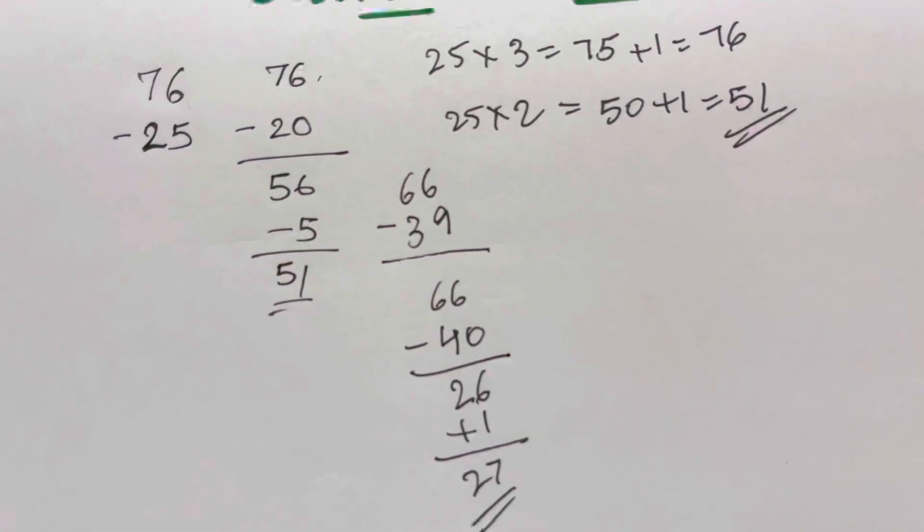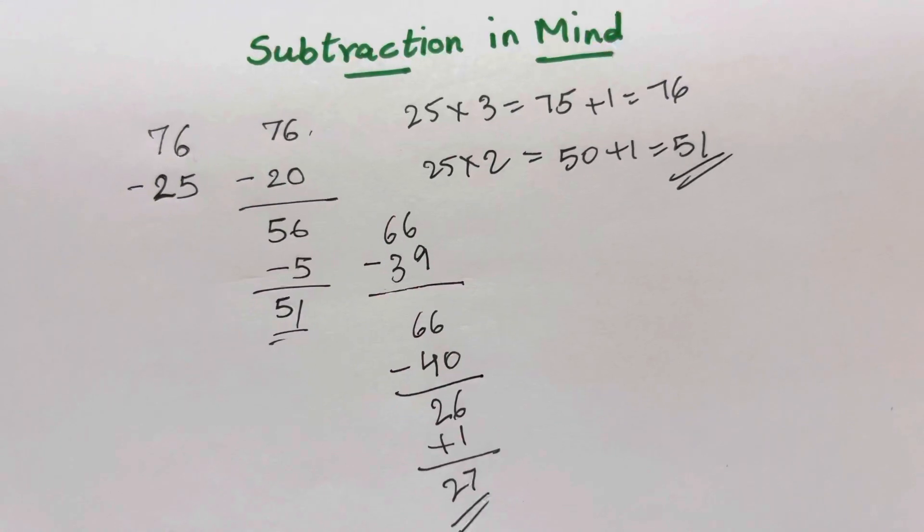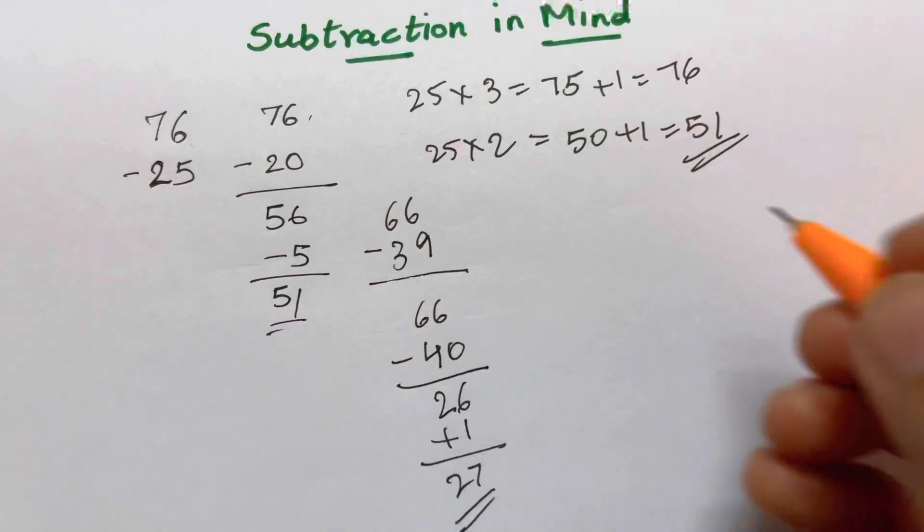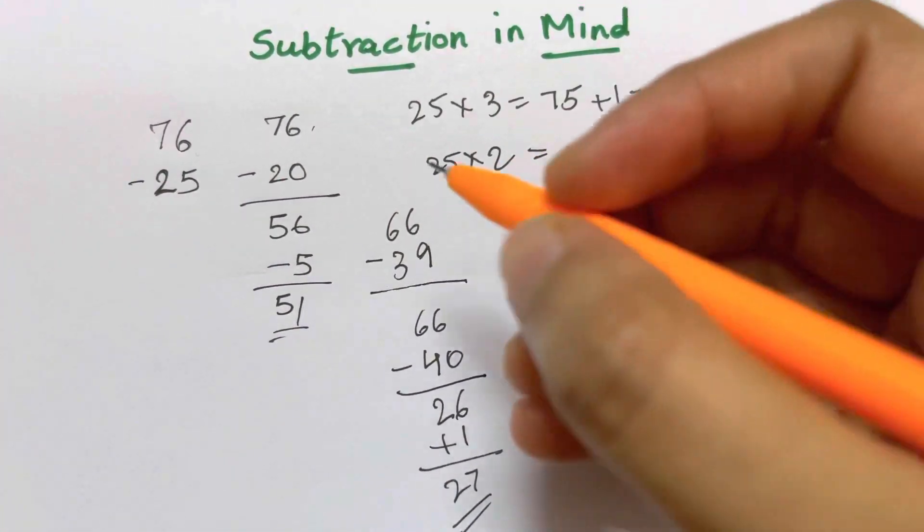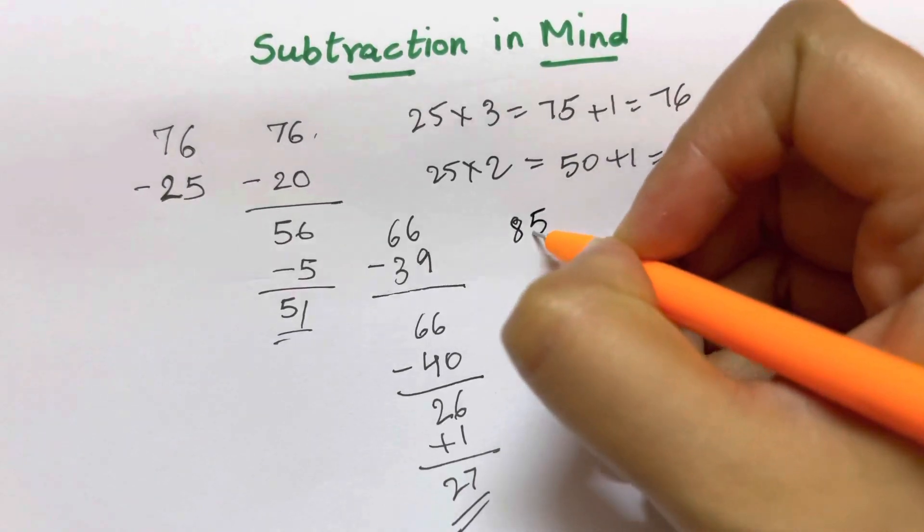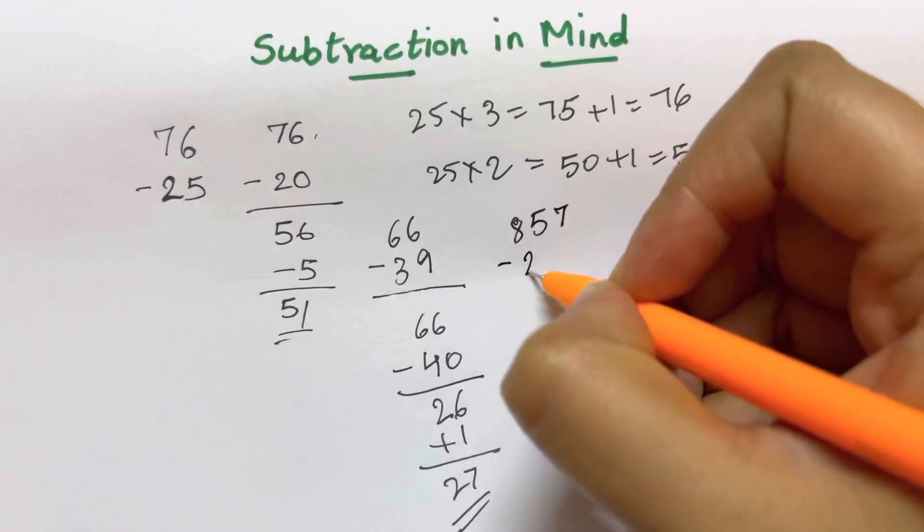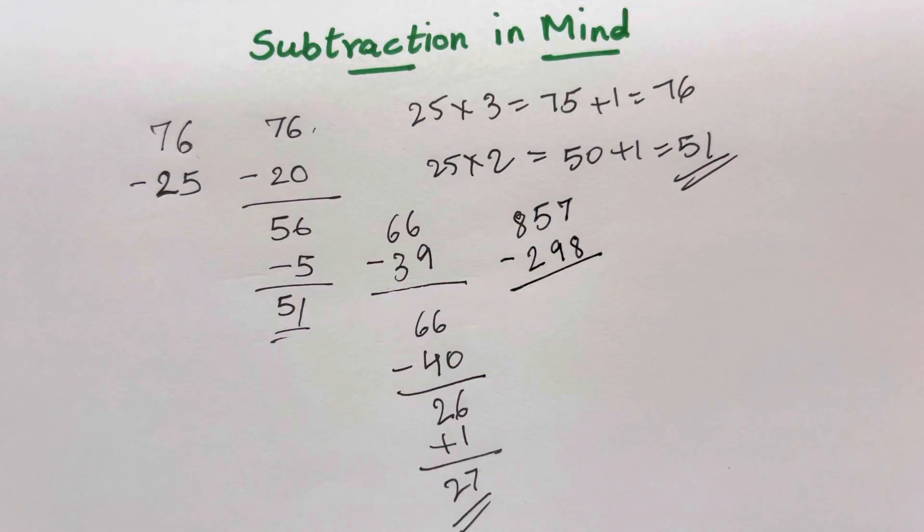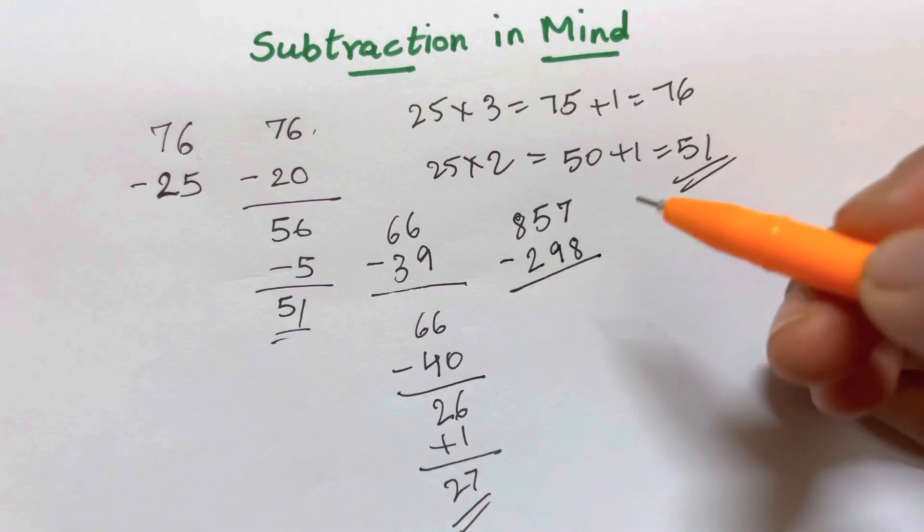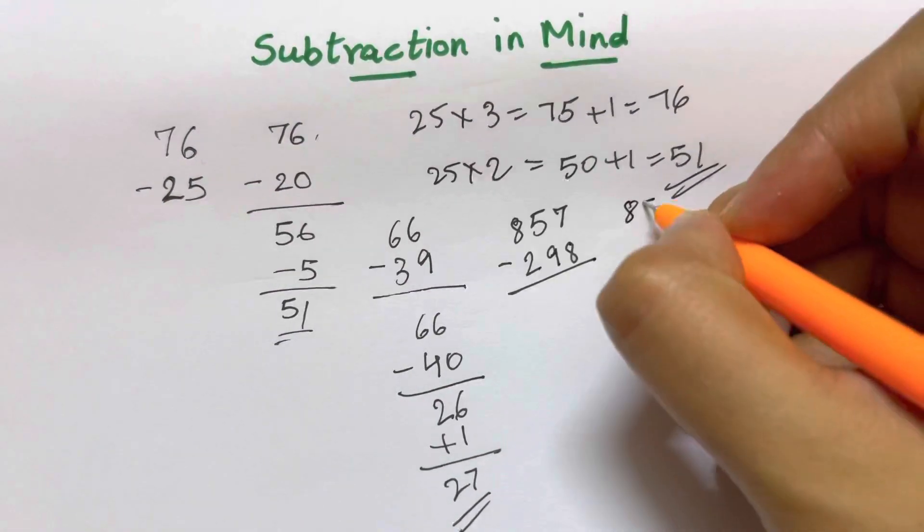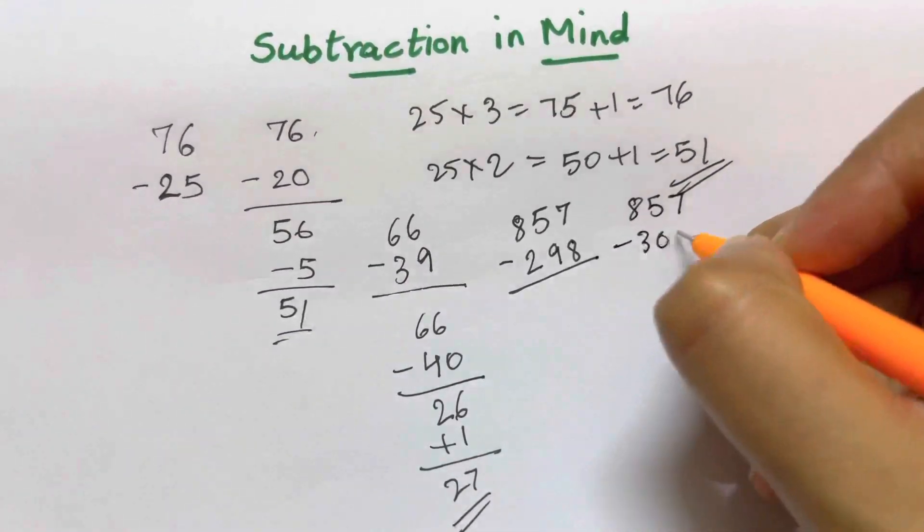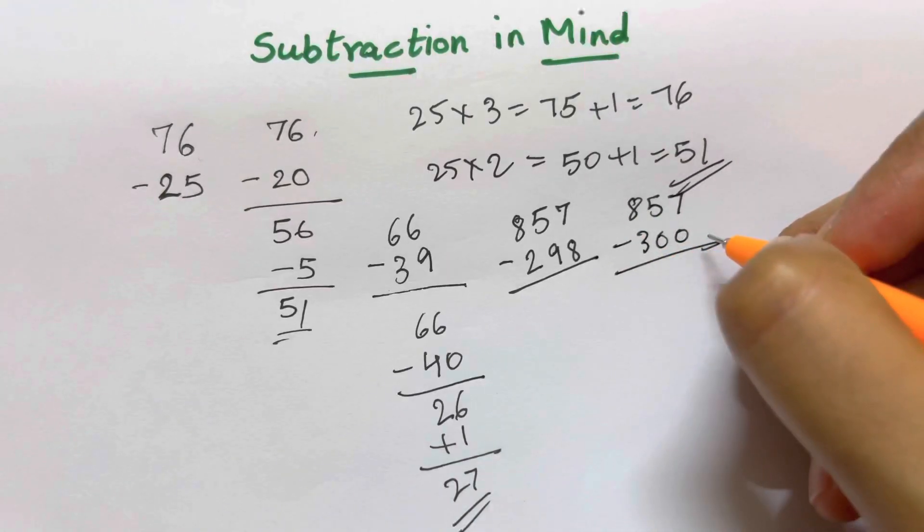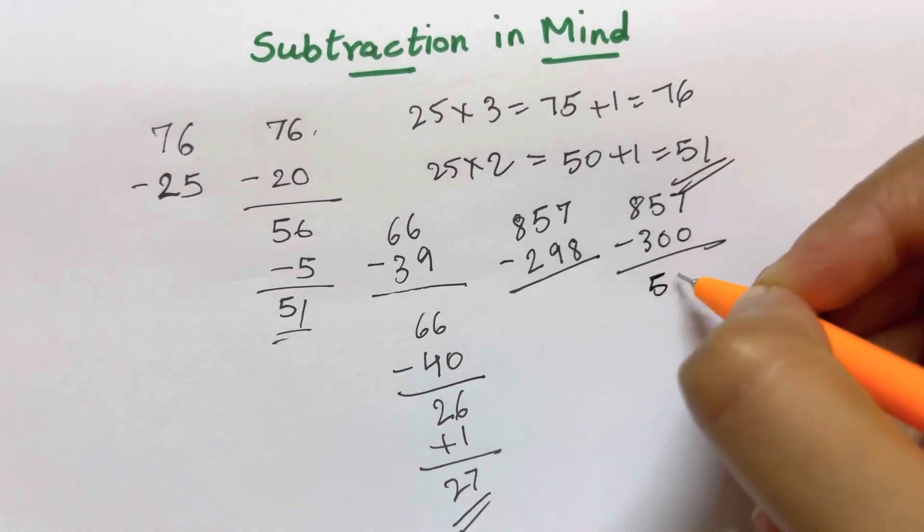Now, suppose I'll give you another number. Let us do 857 minus 298. I think that this will be perfect. So, what are you going to do? You're going to round off 298 to 300. So you'll just do 857 minus 300. That will give you 557.